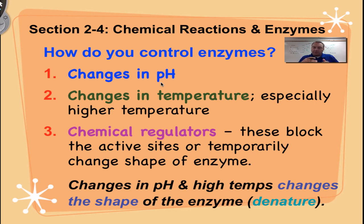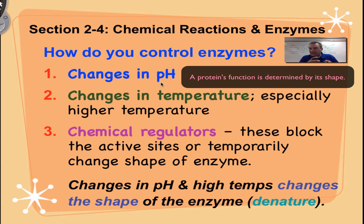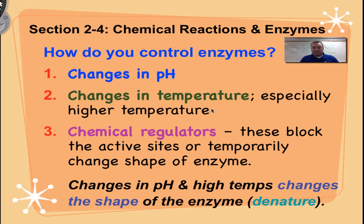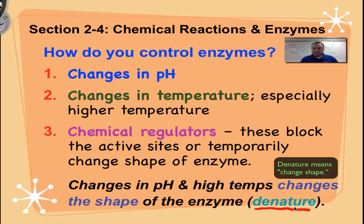If I change the pH of an enzyme, I can actually change its shape and make it stop working. I can do the exact same thing with temperature — drastic changes in pH, but especially higher temperature. Colder temperatures tend to just slow down the molecules so they don't move as fast and the chemical reaction doesn't occur, but heating back up will restore function. However, high temperatures can damage the enzyme so badly that it will no longer work — a process called denature.